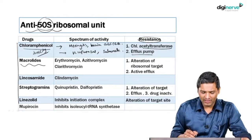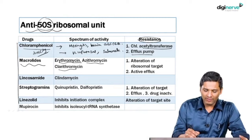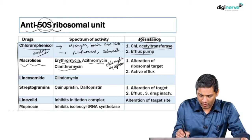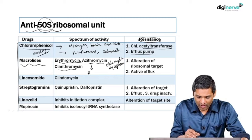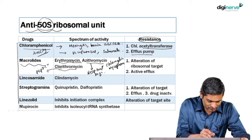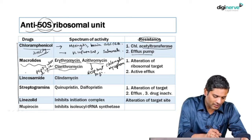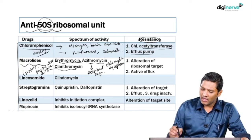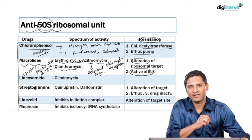Clinical indications for chloramphenicol include brain abscess and meningitis; it has good action on Haemophilus influenzae and the agent of typhoid fever, Salmonella typhi. The next class is macrolides — classical examples are erythromycin, azithromycin, and clarithromycin. They have good action on atypical organisms like Chlamydia and Mycoplasma. Azithromycin is indicated for respiratory tract infections; clarithromycin is given for peptic ulcer disease due to H. pylori. The mechanism of resistance includes efflux pumps and alteration of the target site.